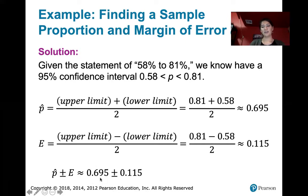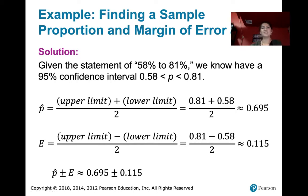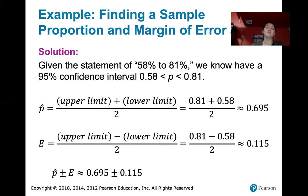This tells us the point estimate was 0.695 and we might be off by up to 11.5 percent in either direction. With a 95 percent confidence interval, we're 95 percent confident the true population proportion — the proportion of smokers who would undergo that therapy and be abstinent for eight weeks — is between 58 percent and 81 percent. If you repeated this process over and over with different samples of size n = 71, the interval would capture the true value of p 95 percent of the time.